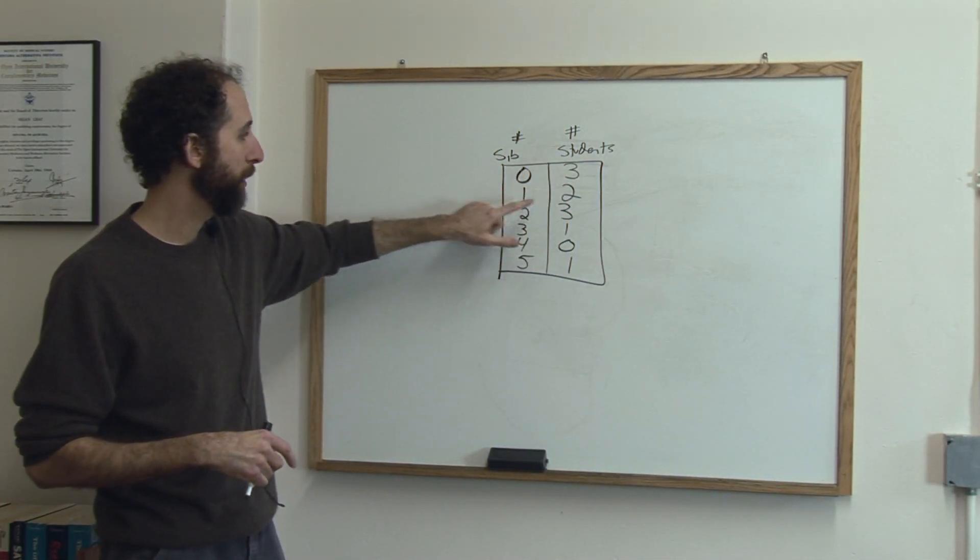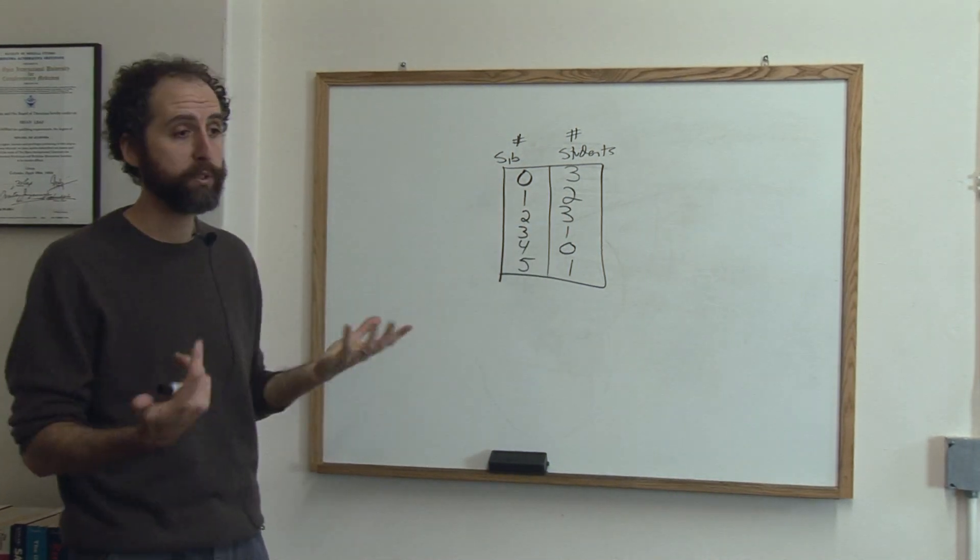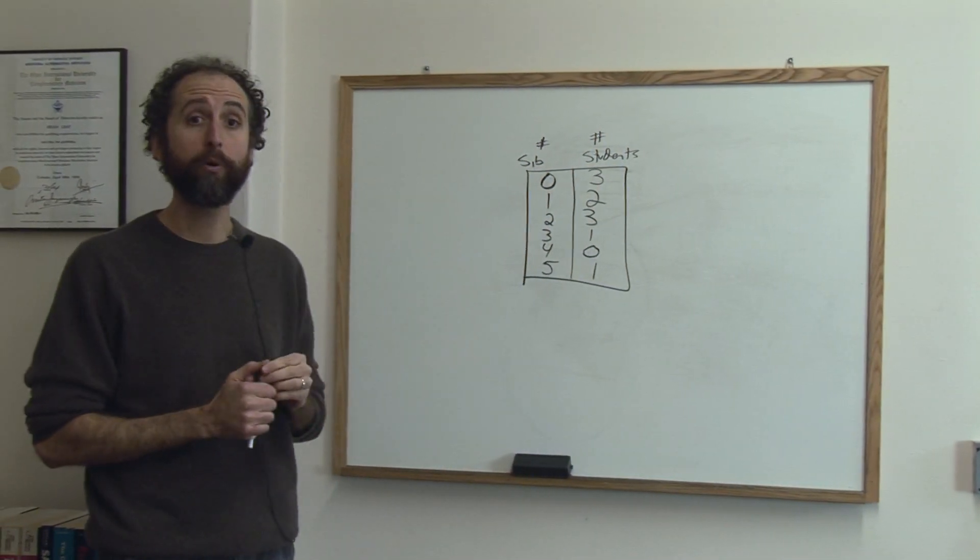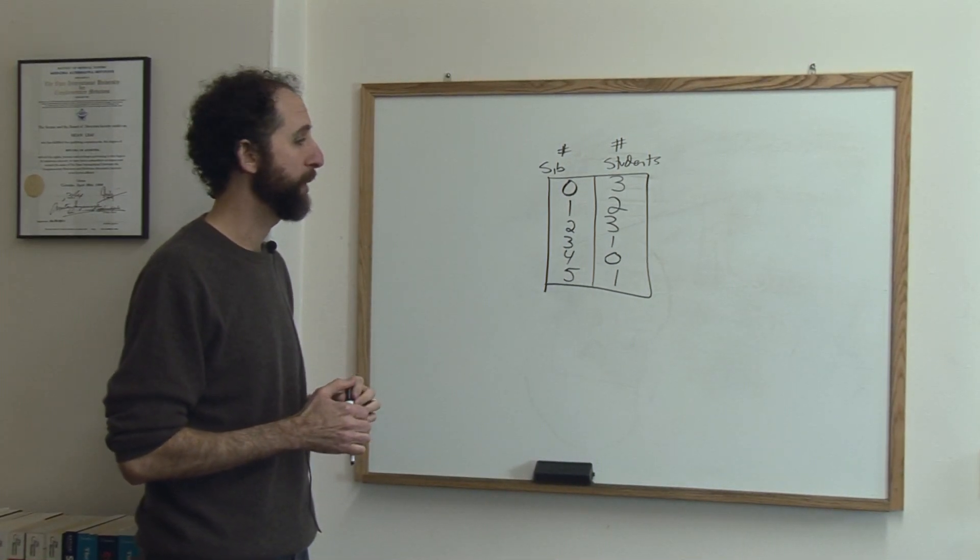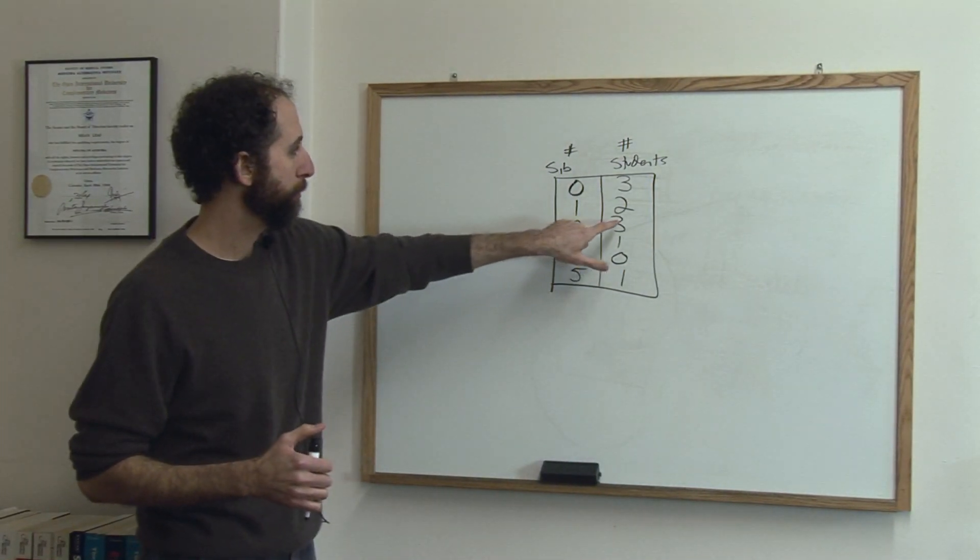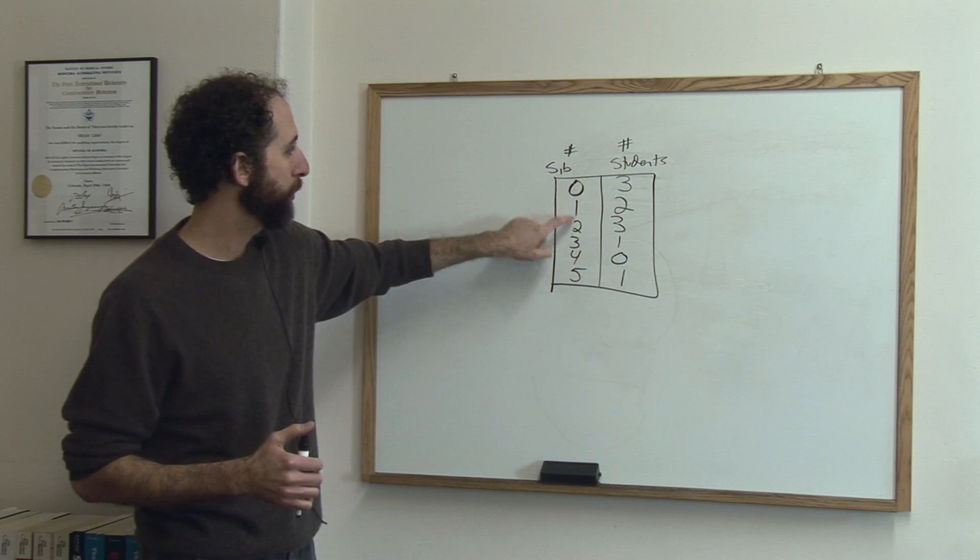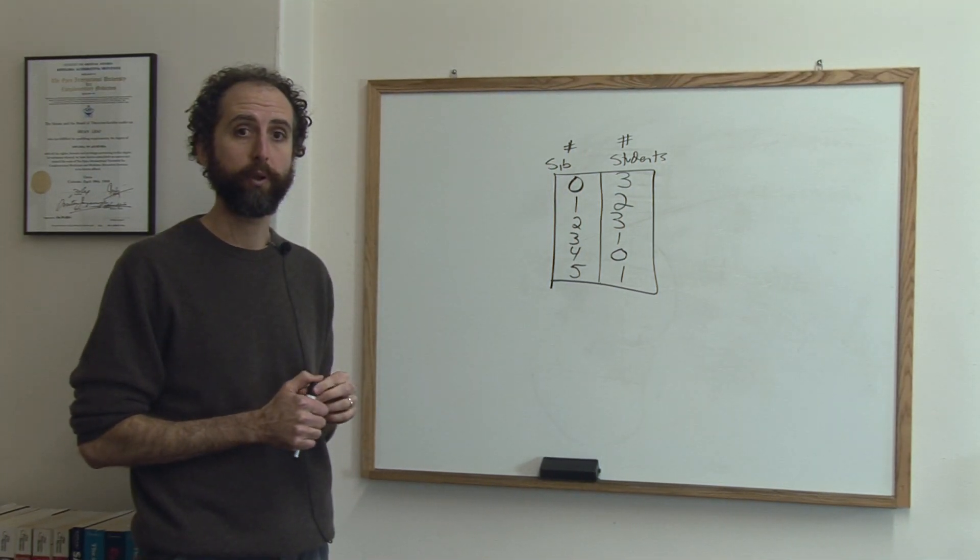So three people had zero, two had one, three had two, one. So if you were using this data table for homework and it said how many students in the room had two siblings, you'd look and say three students had two siblings. And that's the way you use the frequency table.